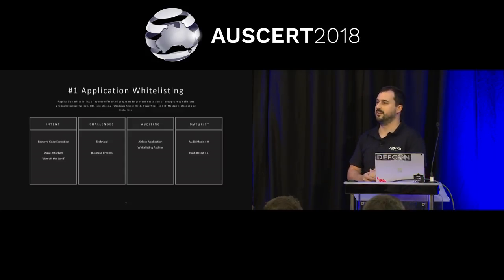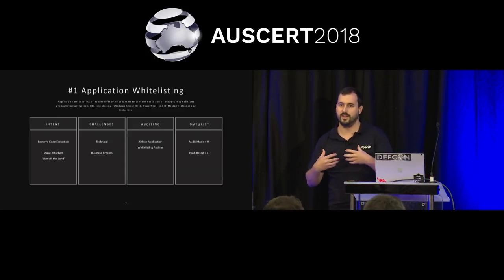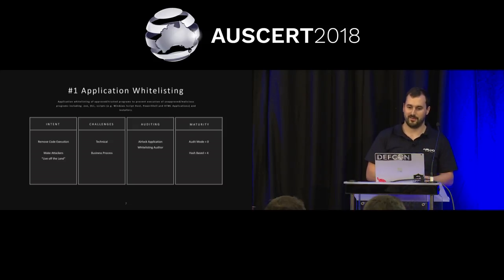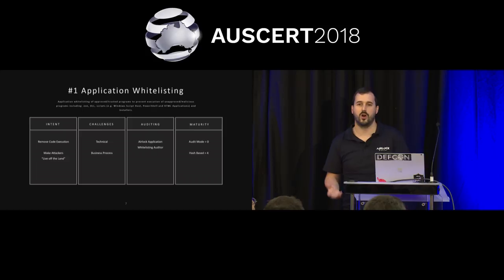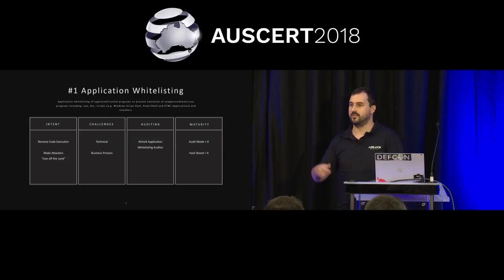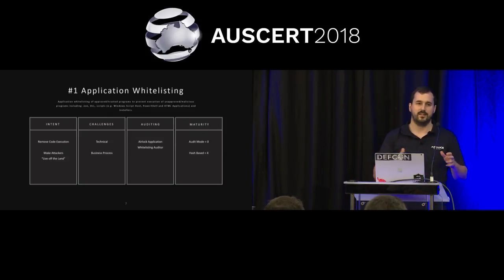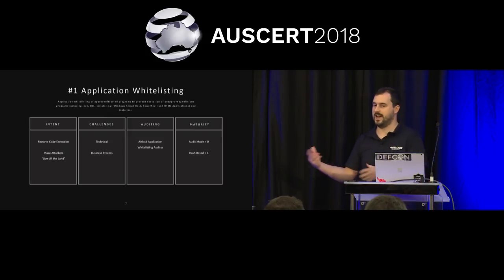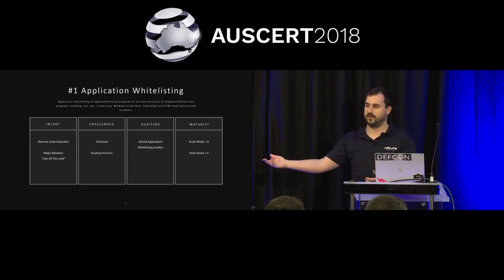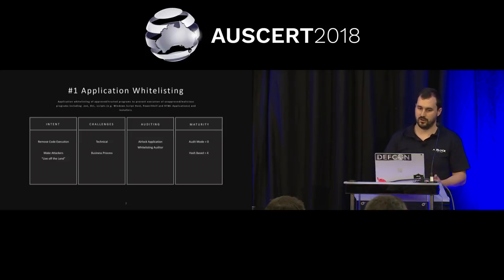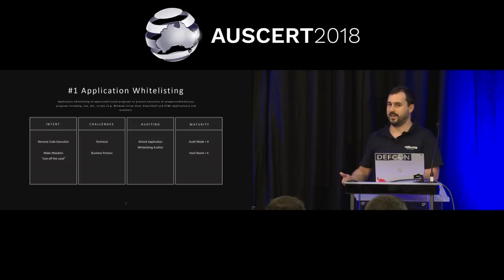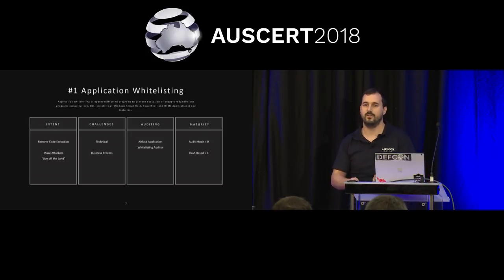Application whitelisting is the number one strategy, and the one I'm probably most familiar with and enjoy the most. The intent of application whitelisting is to remove untrusted code execution on your systems. The reason you want to do this is to prevent attackers from using the tools they need to carry out attacks. For example, if there's an actor inside your environment, they might want to download an FTP tool to exfiltrate data. Preventing that significantly limits their capability, and it makes attackers live off the land — using functionality that inherently exists inside your environment.